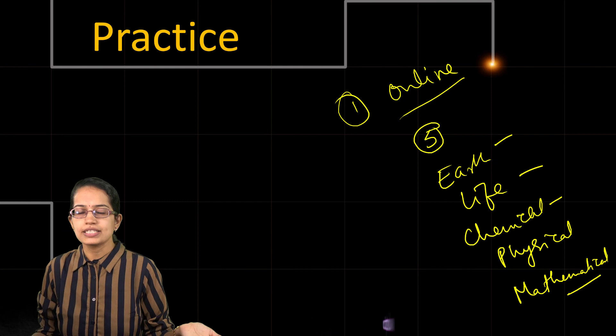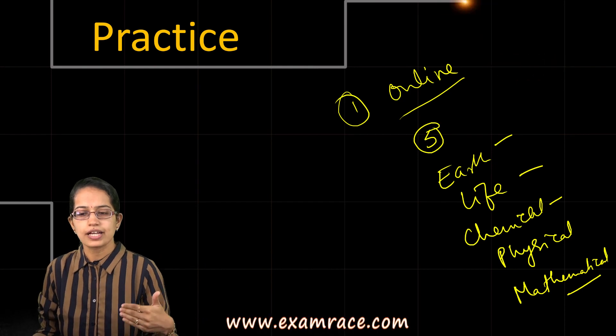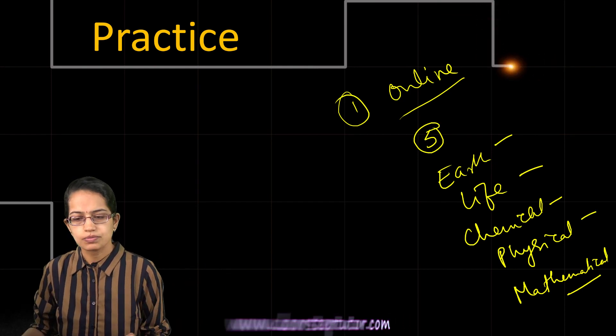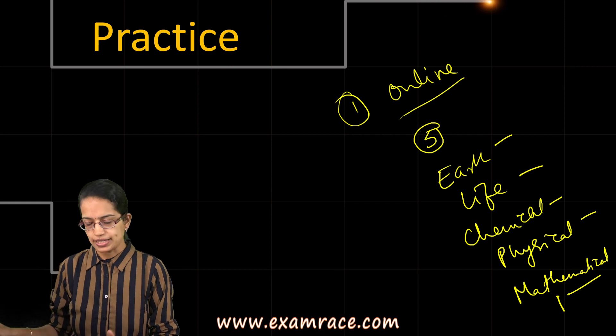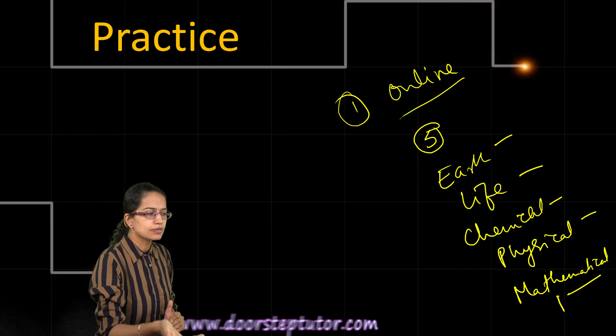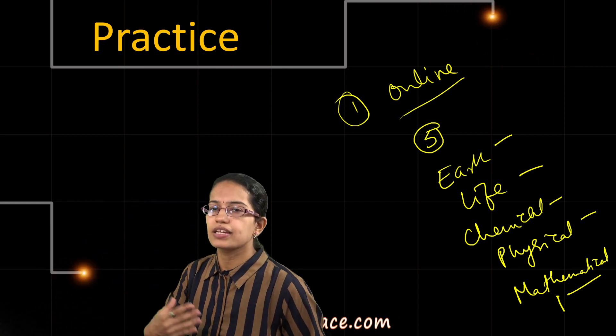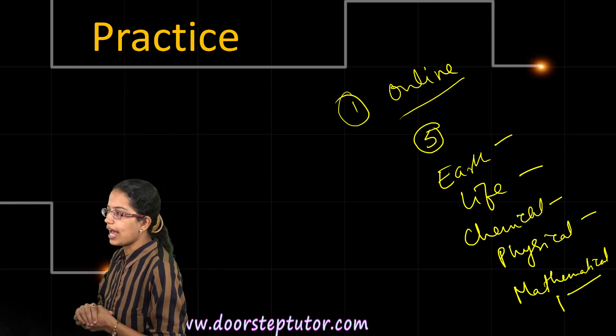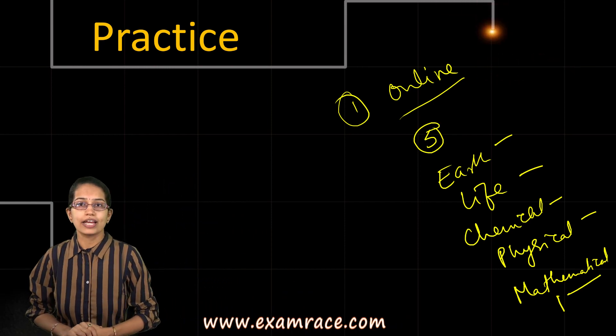Chemical Sciences is for students with MSc Chemistry background, Physical Sciences for Physics background, and Mathematical Sciences for Mathematics background. The eligibility is Masters appearing or appeared candidates. As I said, the more you practice online, the better.